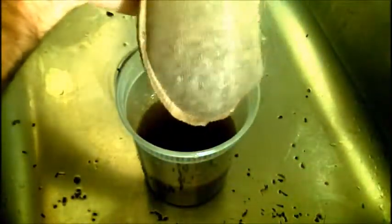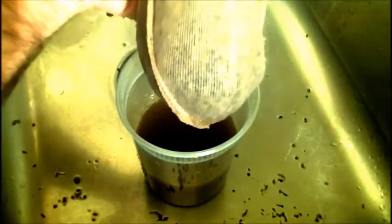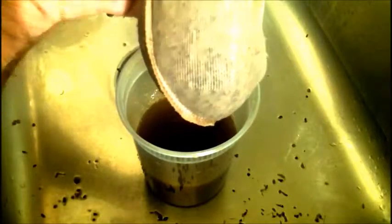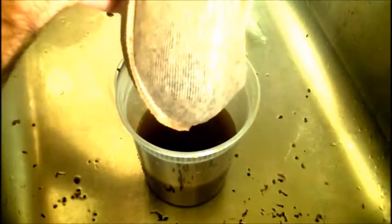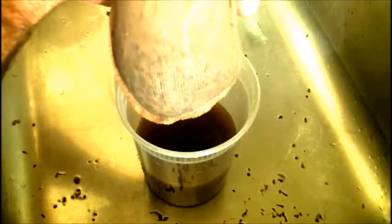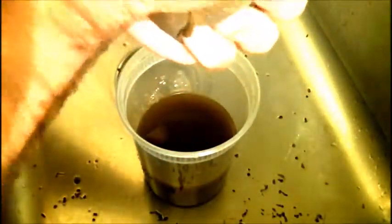All right, so what's left in here, the pulp of the herbs, it would be good to compost that. You could throw that on your compost pile and return it to the earth for nutrients in your future crops that you have.